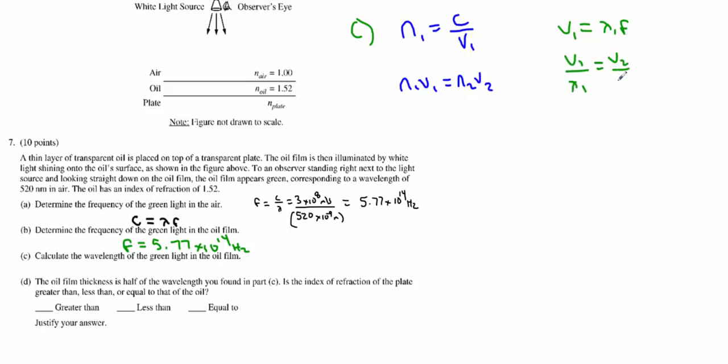Which means it must equal V2 over lambda 2, V3, all the way down the line. Now in this problem we know the indexes, indices, and we know the wavelength of one. We're looking for the wavelength of the other. We don't know the speed, so I want to remove my V1 and V2. So what I'm going to do is bring my N2 over my V1 over to show N1 over N2 must be equal to V2 over V1. I'm going to do the same thing over here. Cross multiply: lambda 2 over lambda 1 must equal V2 over V1.